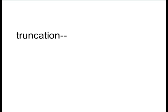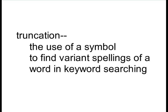Let's start with the definition. Truncation is simply the use of a symbol to find variant spellings of a word when you're keyword searching. The most common symbol you'll find in library databases and catalogs is the asterisk. Other symbols that are sometimes used include the question mark, the exclamation point, and the plus sign. Check the help section of your database if the asterisk doesn't work.